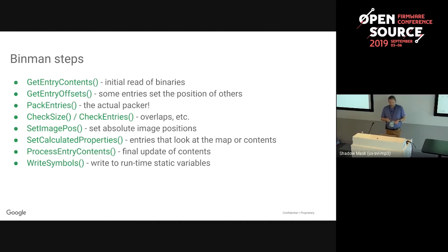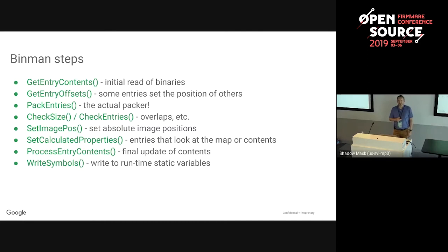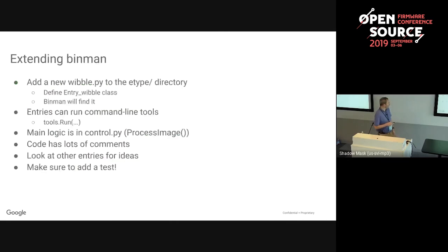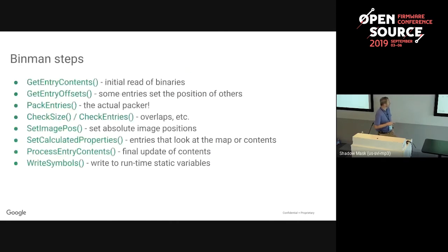After packing, we set the image position. Now that we know exactly where everything is, we can tell you the absolute image position of everything regardless of hierarchy and write that information into the image. Then we calculate relevant properties - like putting the image position into the image description. Finally we update the contents if needed, for example changing values in an ELF file, and then write symbols out which makes things available at runtime.